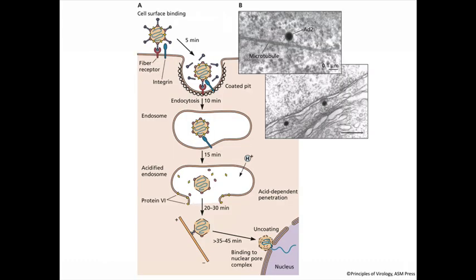Now we've talked about how envelope viruses get rid of their genome — making an envelope virus metastable involves a combination of receptor interaction, low pH, cleavage, and sometimes a fusion receptor. Those are the kinds of signals we're talking about — multiple signals which is a good check to make sure you don't fuse in the wrong place.